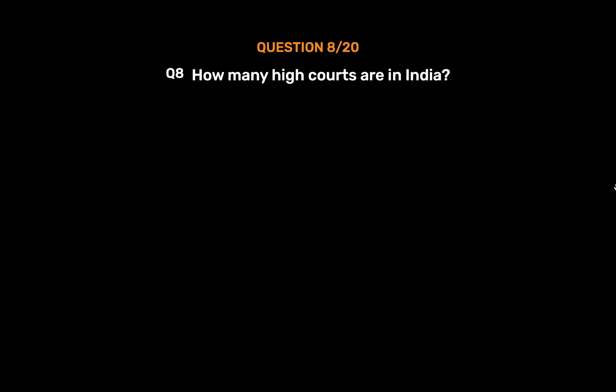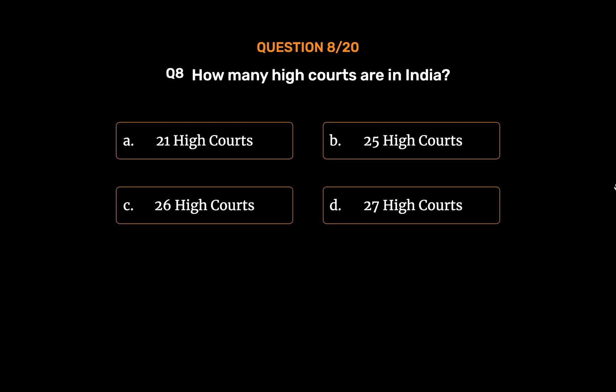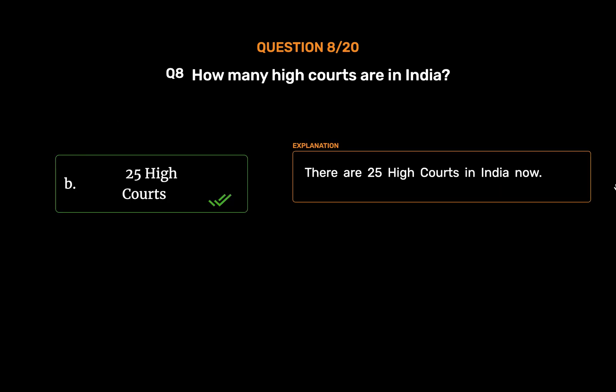Question No. 8. How many high courts are in India? Option A: 21 high courts. Option B: 25 high courts. Option C: 26 high courts. Option D: 27 high courts. The correct answer is Option B: 25 high courts. There are 25 high courts in India now.